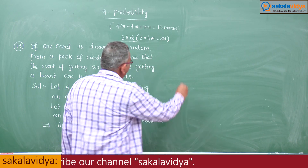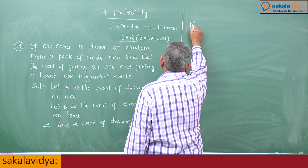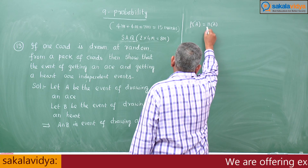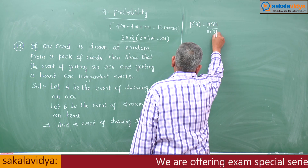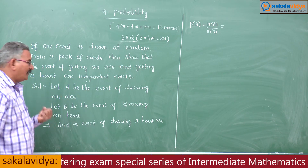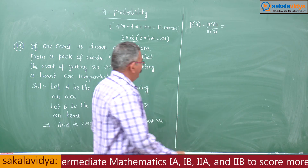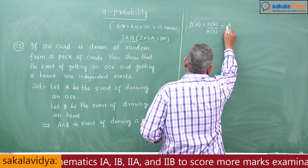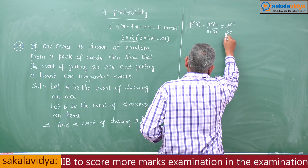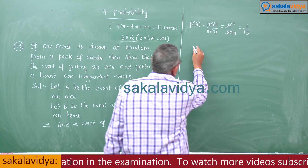Now let us find out P of A, the probability of A. P of A means N of A by N of S. Here N of A — how many aces are there? There are 4 aces. So, 4 by 52, which simplifies to 1 by 13.